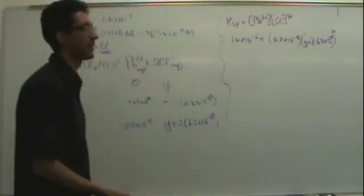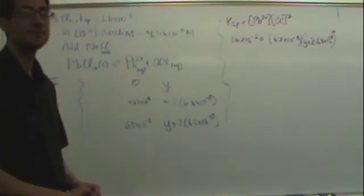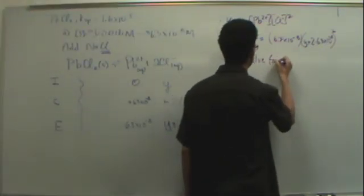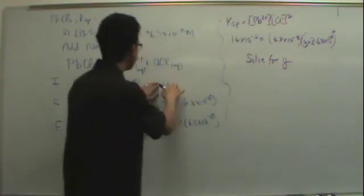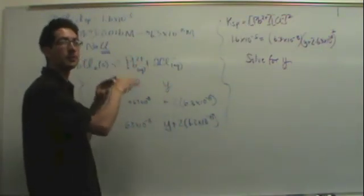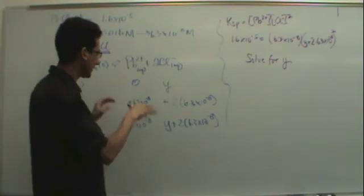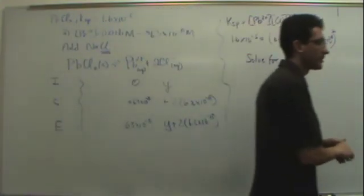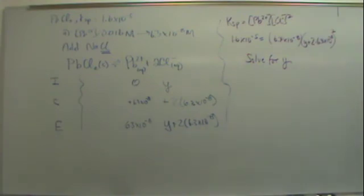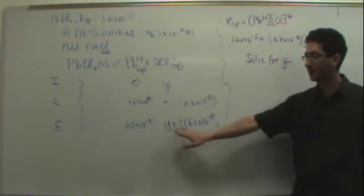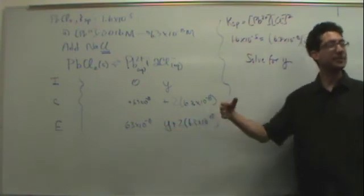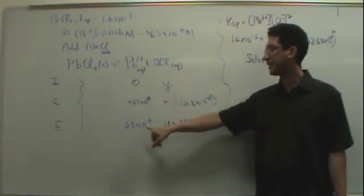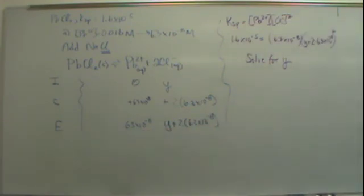So you've got to solve for Y right now. That's your final answer - solve for Y. Y represents the amount of sodium chloride you had to add to get to that final concentration. Usually when we do a problem, we give you the amount of sodium chloride and you solve for this number down here. But this is the reverse.